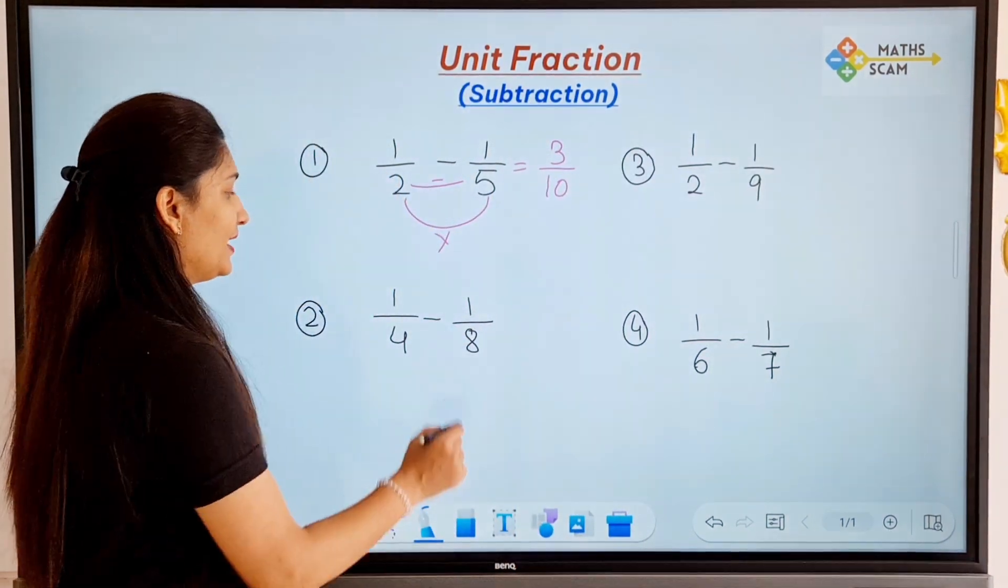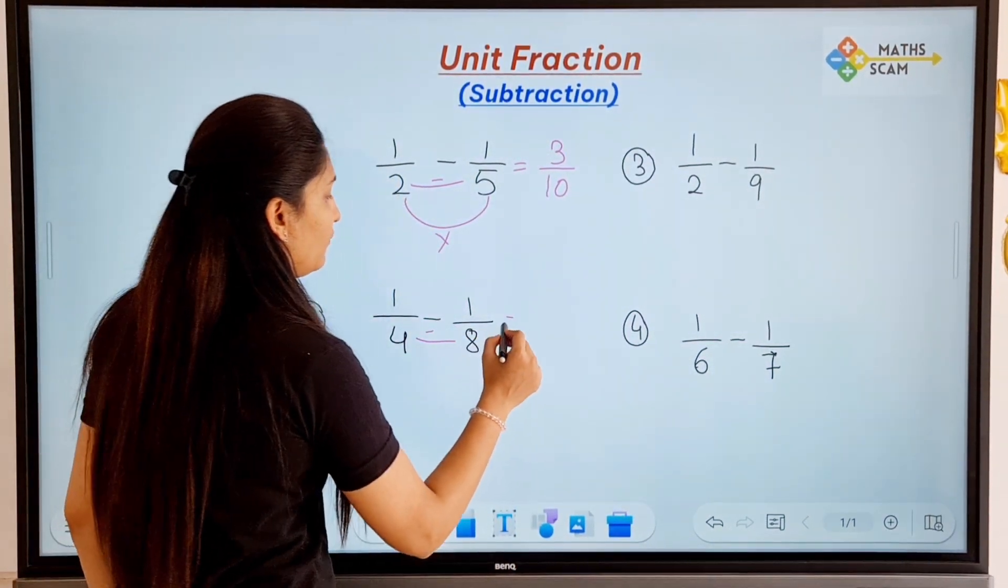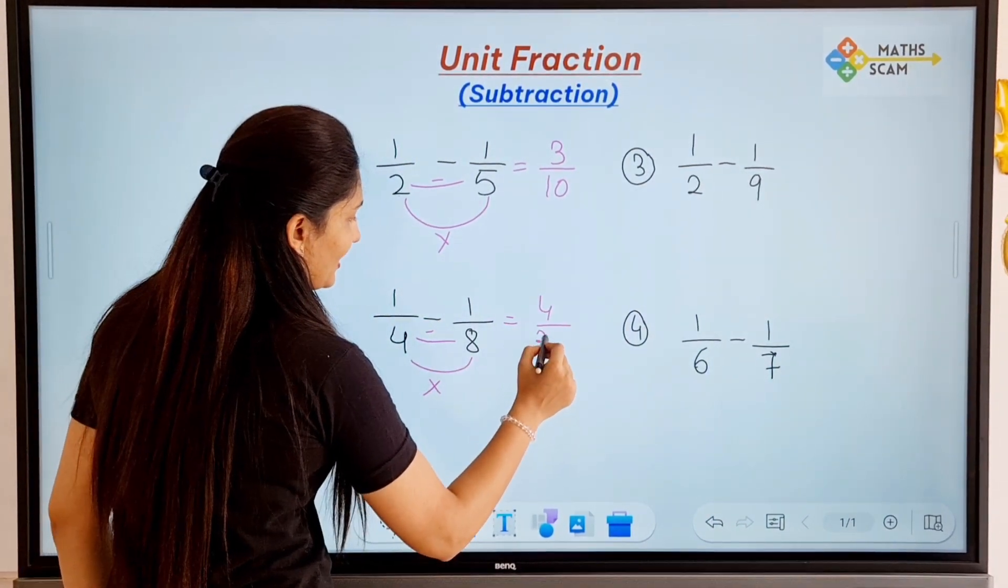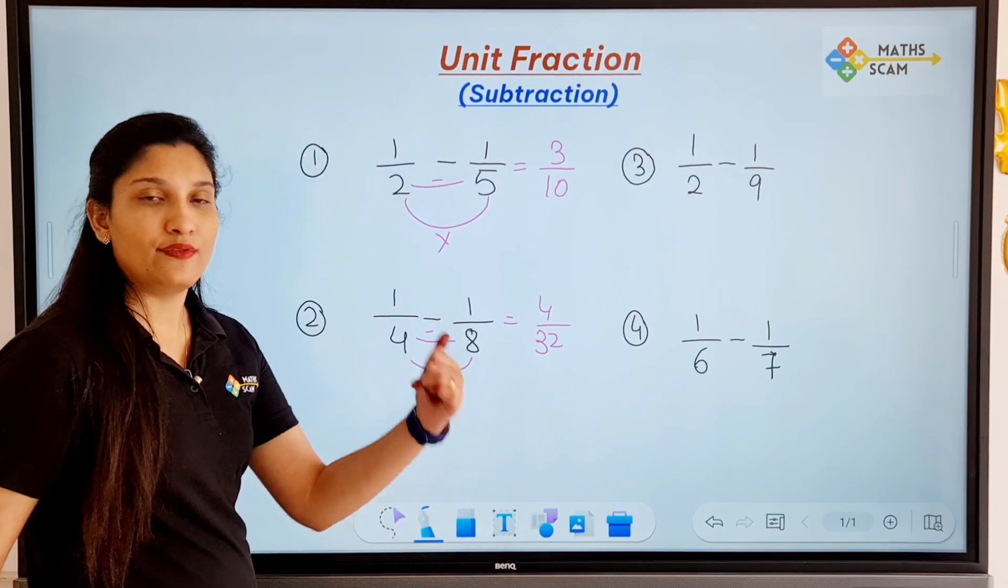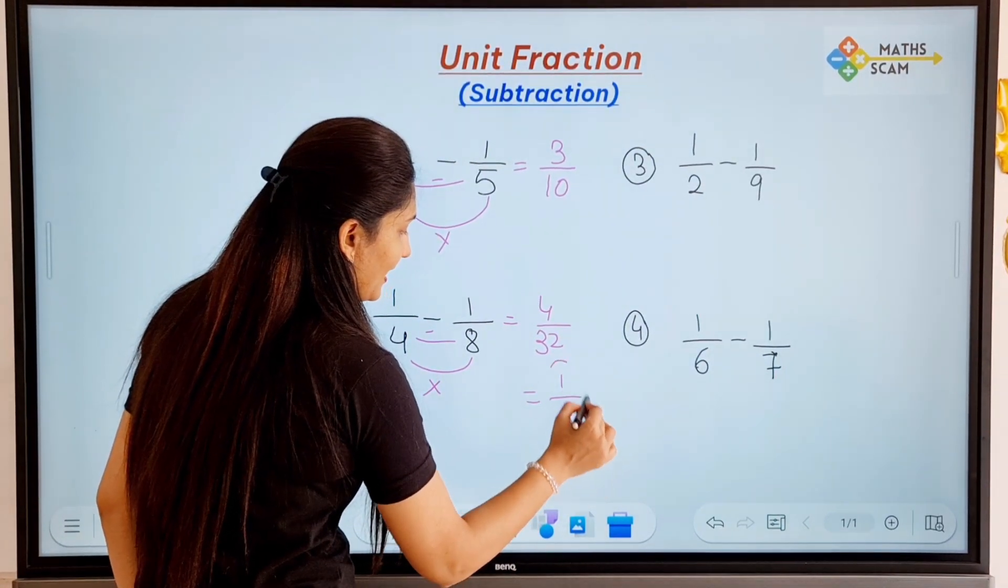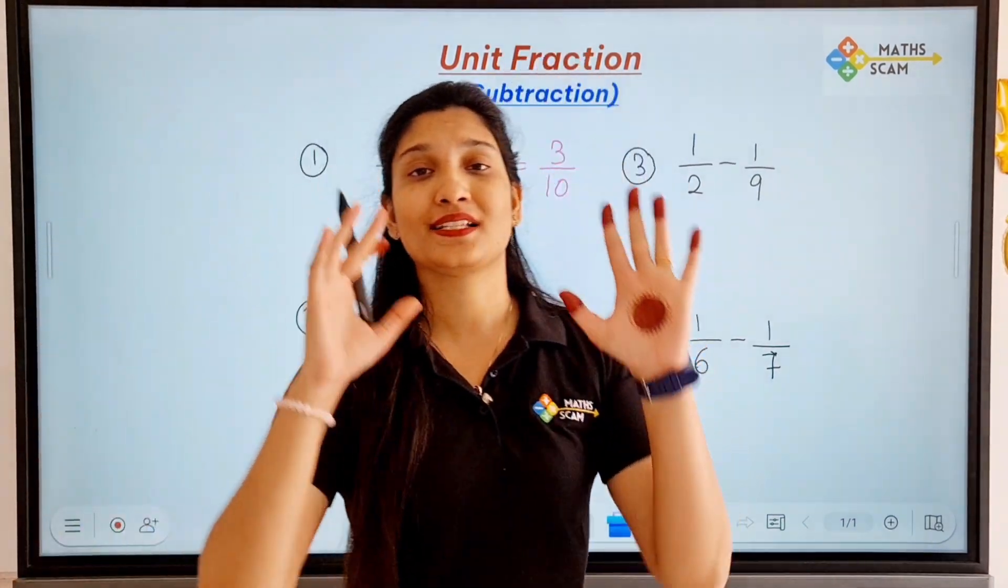So let's solve the next question. 8 minus 4 is 4, and then 4 times 8 is 32. So answer is 4 by 32. We can simplify this fraction. 4 divided by 4 is 1, 32 divided by 4 is 8, and the answer is 1 by 8. It is that simple.